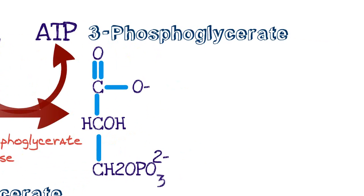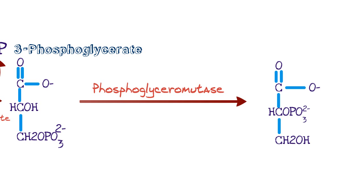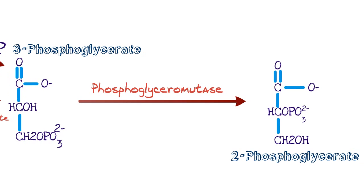Now that we have 3-phosphoglycerate, the next step involves phosphoglycerate mutase. This enzyme changes around the molecule — it mutates it. There's no change in the molecule's composition: no hydrogen, oxygen, or phosphate leaves or enters. Phosphoglycerate mutase converts 3-phosphoglycerate to 2-phosphoglycerate — it takes the phosphate group from the 3rd carbon and attaches it to the 2nd carbon.